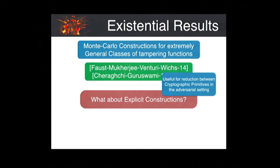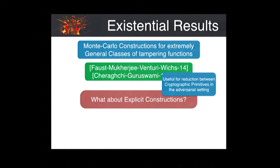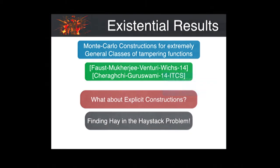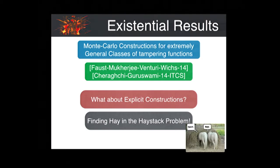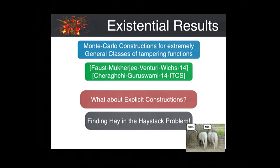Now we know explicit constructions are useful and interesting. Can't we just de-randomize these existential results to obtain explicit constructions? This is the famous problem of finding hay in the haystack, and we know these problems are notoriously hard for most problems in theoretical computer science, and this particular case is no different.